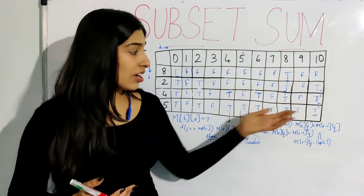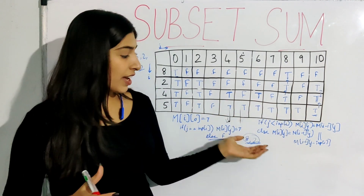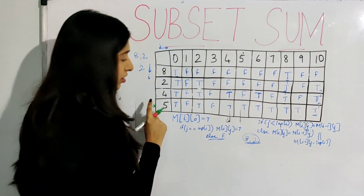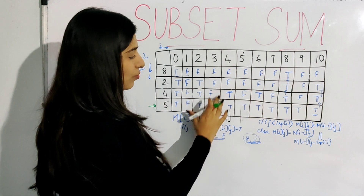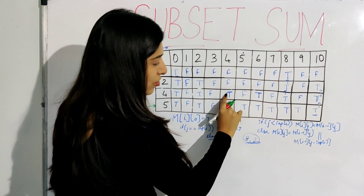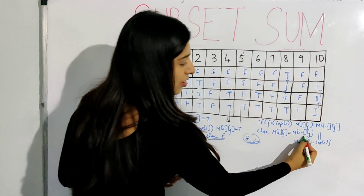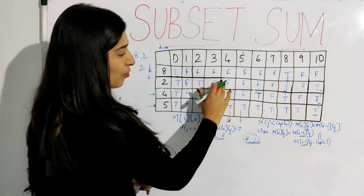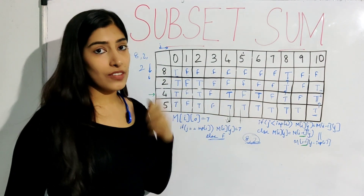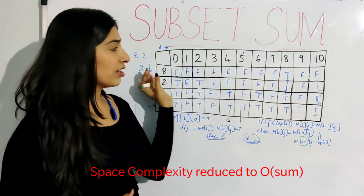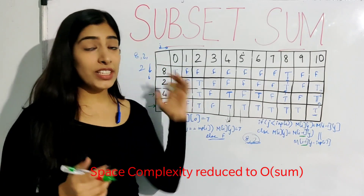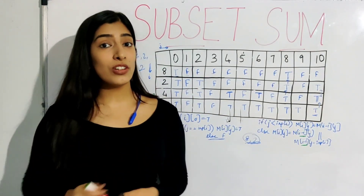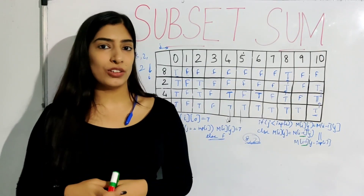What optimization can we do? If we just need to check true or false without finding the exact subset, there is a good space optimization. To form each row, all values needed come from just one row above — either directly above or going back some steps in the same previous row. So we really don't need all previous rows and can keep only two rows at a time. I recommend trying more examples. Please leave comments below and like, share, and subscribe. Thank you.